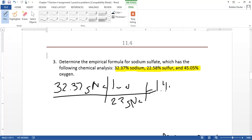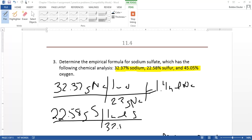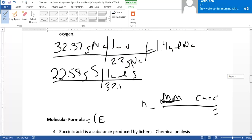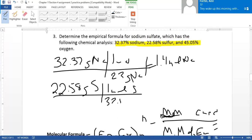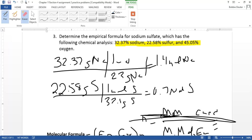And we have 22.58 grams of sulfur. Again, one mole of sulfur—look at the periodic table. The molar mass of sulfur is 32.1 grams, and that would equal 0.7 moles of sulfur.